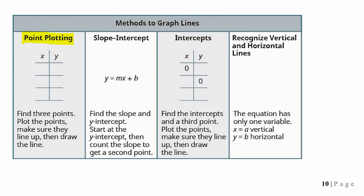We have another video where we showed you how to find the intercepts of the line with a third point, make sure those three points line up, and then draw the line. We've also talked about how to recognize vertical and horizontal lines, knowing that those are the lines where the equation has only one variable — if you have x equals a number, that's your vertical line, and y equals a number, that's your horizontal line.